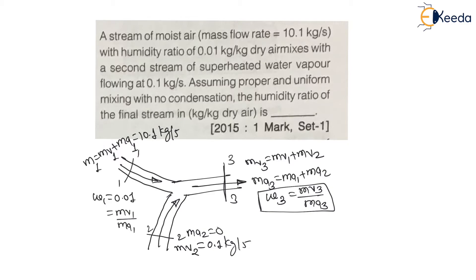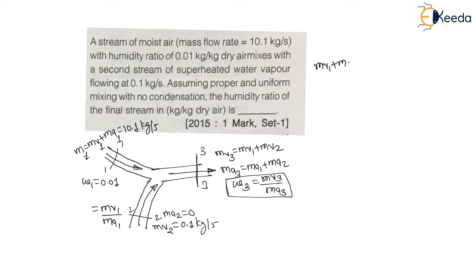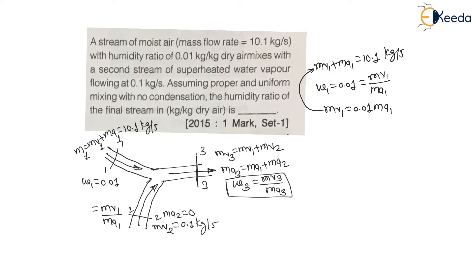For Stream 1, the total mass m1 = mass of vapor 1 plus mass of air 1 = 10.1 kg per second, and specific humidity omega 1 = 0.01 = mass of vapor 1 divided by mass of air 1. From these two equations with two unknowns, mass of vapor 1 equals 0.01 times mass of air 1. Substituting: 0.01 × mass of air 1 + mass of air 1 = 10.1.